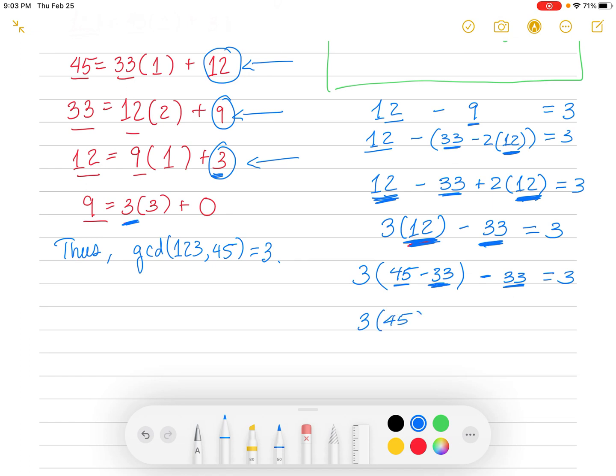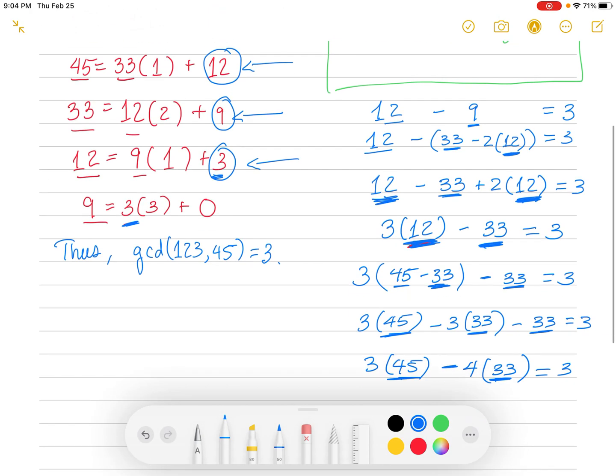We'll distribute the 3 now. We've got 3 times 45 minus 3 times 33 minus 33 equals 3. And you want to combine your 33s. You've got 3 times 45. I have minus 3 33s and minus 1 33s, that are going to be minus 4 33s. You're kind of treating the 45 and the 33 like variables right now.